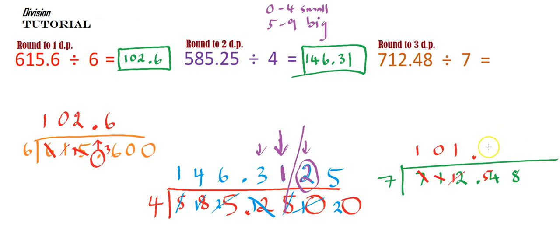7 into 58 goes 8 with 2 left over. Okay, I'm going to need some zeros here by the looks. 7 into 20 goes twice. And that leaves me with 6 left over.